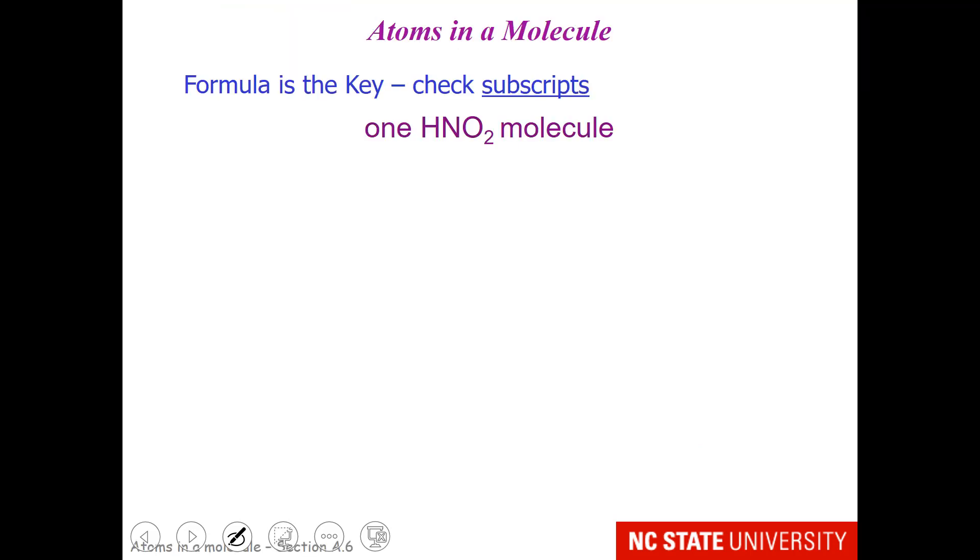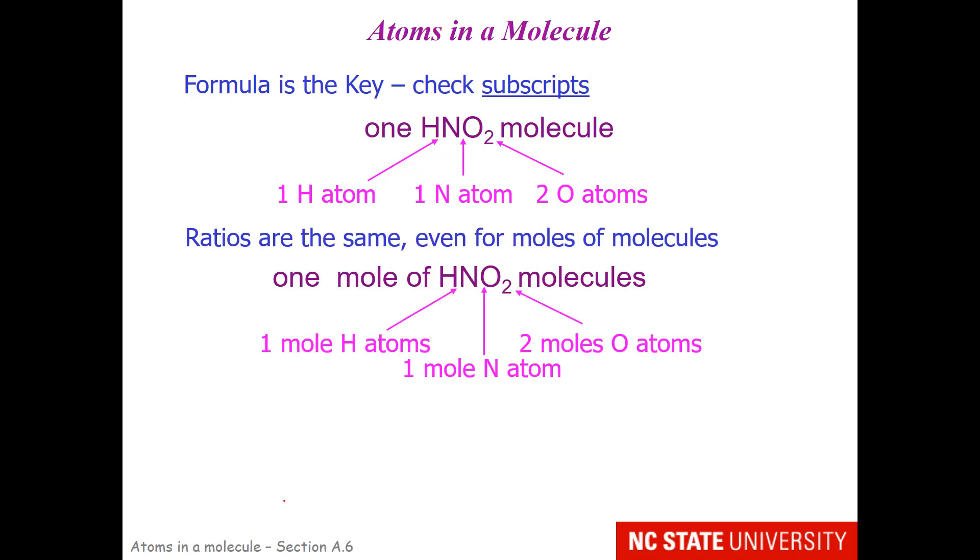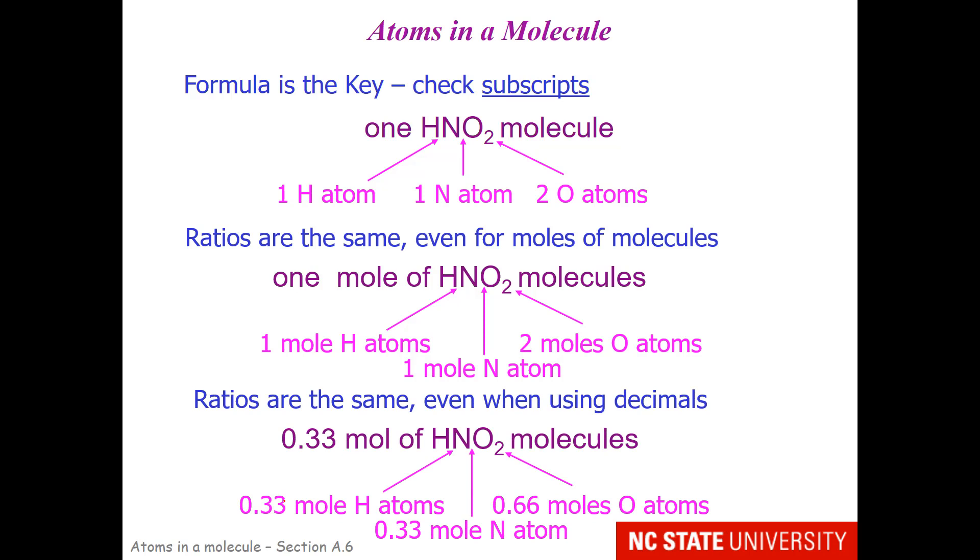Our next topic is atoms in a molecule. And here the formula is the key, so you should check the subscripts. Suppose that you have one HNO2 molecule. This tells you that this molecule is composed of one hydrogen atom. When you see no subscript, the implication is there is one of those types. So there would be one nitrogen atom and two oxygen atoms. This ratio holds true even if you have one mole of HNO2 molecules. The ratio is 1 to 1 to 2, but this time the units are in moles. And the ratios are the same even when you have a decimal value. You notice that 0.33 to 0.33 to 0.66 is a ratio of 1 to 1 to 2.